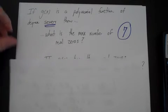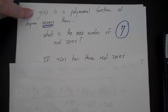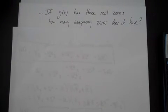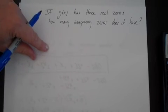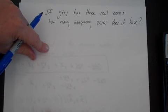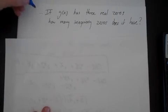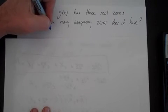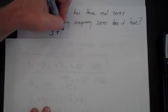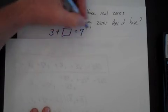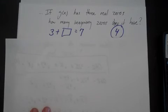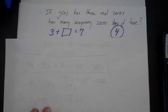If g(x) is a polynomial function of degree 7 and has 3 real zeros, how many imaginary zeros does it have? Real plus imaginary must equal 7, so 3 plus what equals 7? The answer is 4 imaginary zeros. Is it possible to have 4 imaginary zeros? Yes — they always come in pairs, so that's 2 pairs of imaginary zeros.